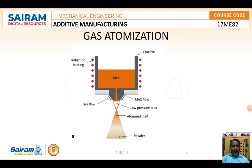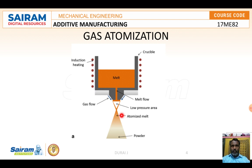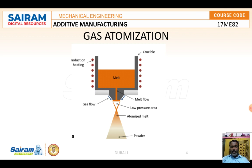In gas atomization, instead of water, gases are used — such as argon gas, nitrogen gas, or helium gas — as a jet. The molten metal is disintegrated, and the atomized powder is collected. Fluidized bed cooling is used when certain powder characteristics are required. The gas flow disintegrates the molten metal stream and the resulting powder is stored at the bottom.